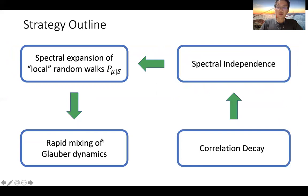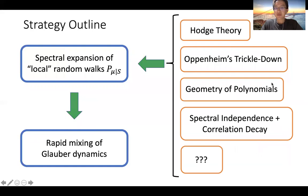Roughly speaking, that's how we go from correlation decay to spectral independence. To remind you: we reduce rapid mixing of the Glauber dynamics using known results in high-dimensional expander theory to spectral expansion of local random walks, use spectral independence to get that expansion, and use correlation decay to obtain spectral independence.